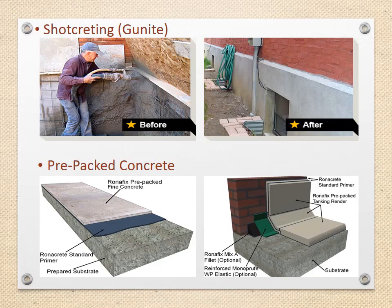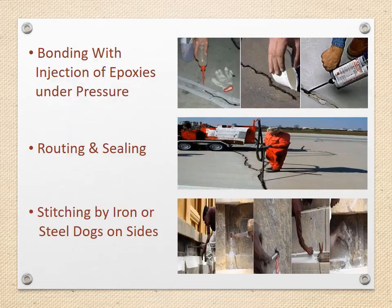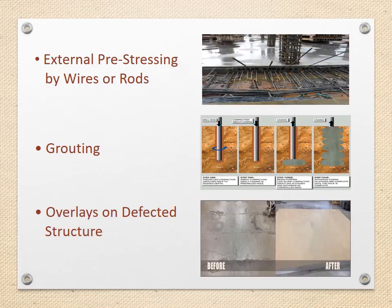Other methods include: prepact concrete, bonding with injection of epoxies under pressure, routing and sealing, stitching by iron or steel dogs on sides, external pre-stressing by wires or rods, grouting, and overlays on defected structures.